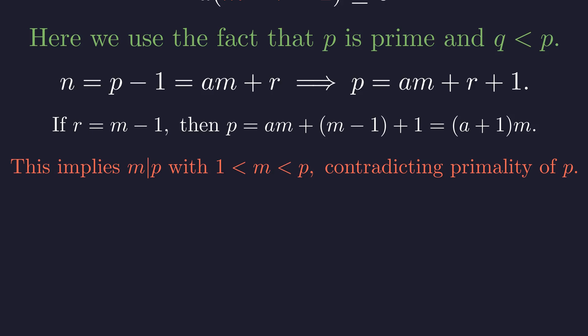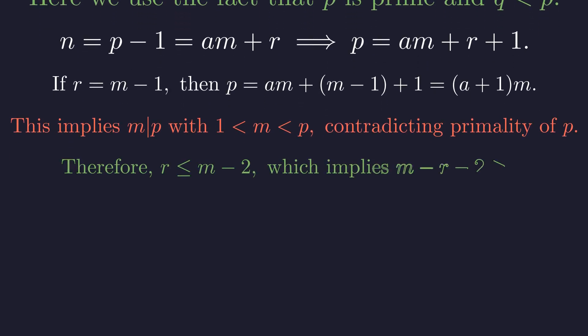A prime number by definition has no divisors other than 1 and itself. We can't have m dividing p when m is strictly between 1 and p. This contradiction shows our assumption was wrong, so r cannot equal m minus 1. The remainder must be at most m minus 2, which means m minus r minus 2 is at least 0.